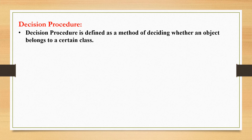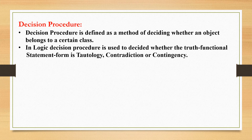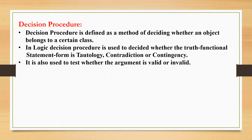What do you understand by a decision procedure? A decision procedure is defined as a method of deciding whether an object belongs to a certain class. In logic, a decision procedure is used to decide whether the truth functional statement form is a tautology, contradiction, or contingency. These are the three statement forms we will be studying in detail. It is also used to test whether an argument is valid or invalid.